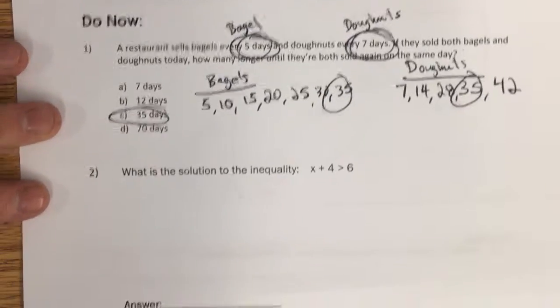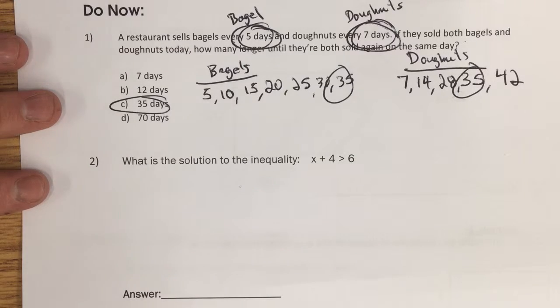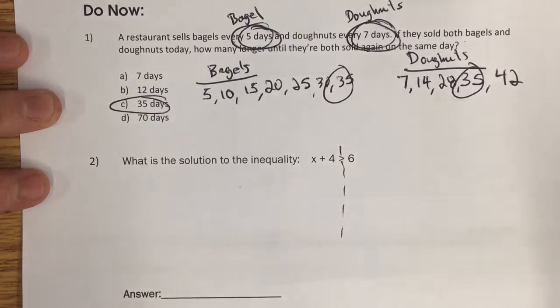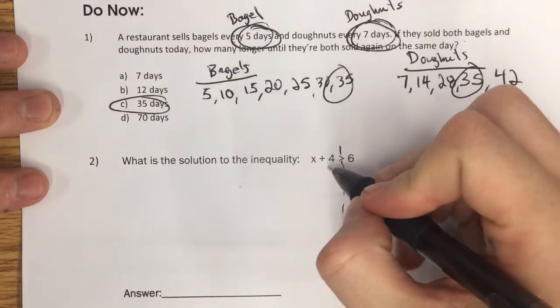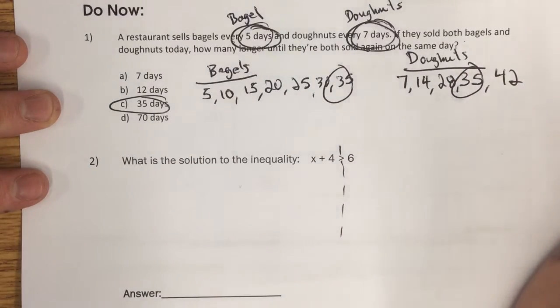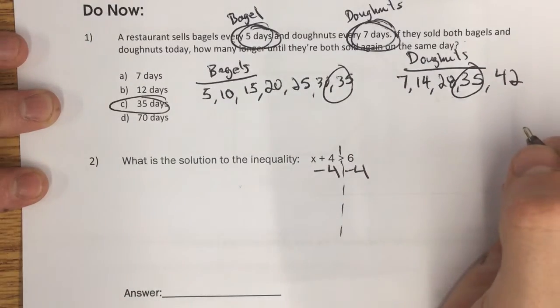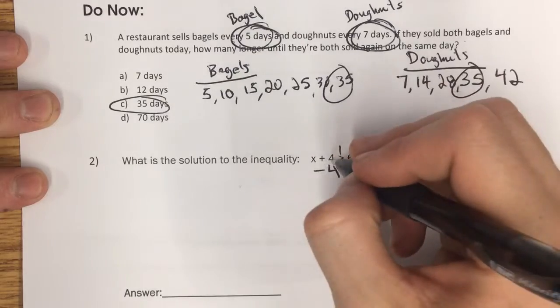Number two. When we have an inequality to find the solution, we're going to approach it just like an equation where we do the same thing to the left and the right side. So if I have x plus 4 on the left, the inverse of that, the thing that will cancel that out, will be minus 4 on both sides.